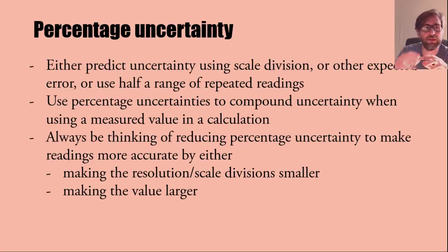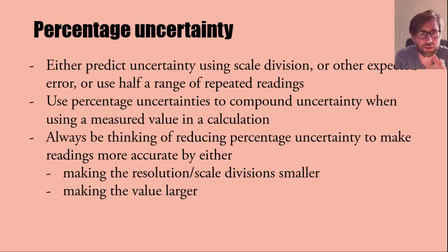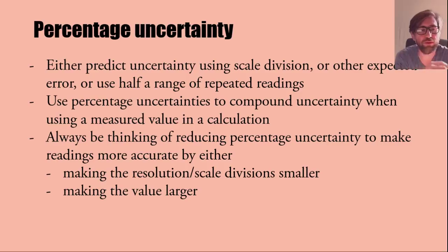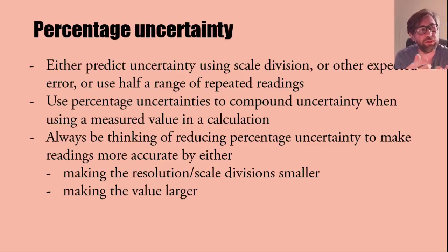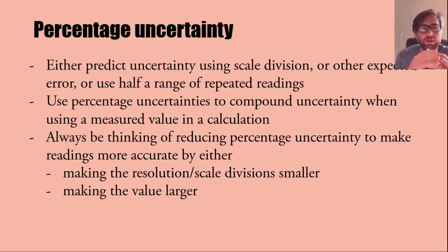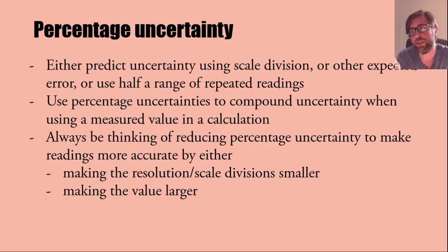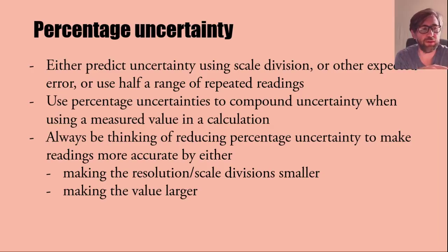The other big idea is percentage uncertainty — I can't stress this enough. You can predict uncertainties using scale divisions: plus or minus half a scale division. Or you can use a different expected error — for example, timing with a stopwatch won't be plus or minus half a millisecond, so you might say the human reaction time of about 0.2 seconds is a more sensible uncertainty. If you have repeated readings, your uncertainty is half the range.